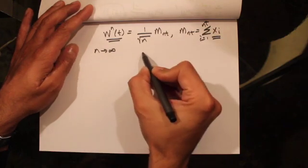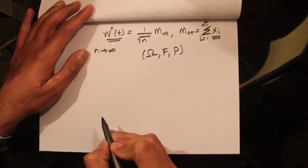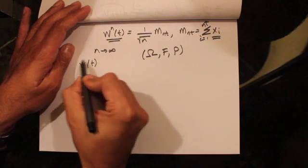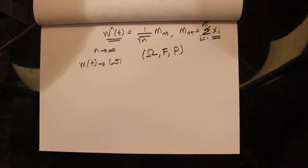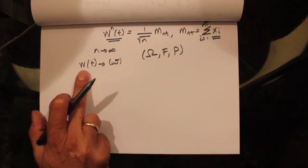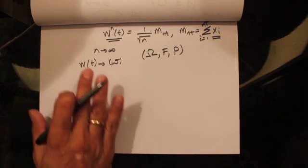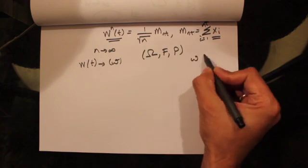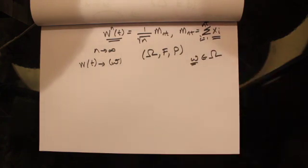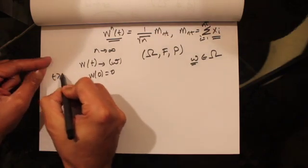Now for the formal definition of Brownian motion: let's consider a probability space given by a sample space, a sigma-algebra, and a probability measure. Consider a continuous function W(t) which depends on omega. You can think of it as tossing a series of coins and, depending on the outcome of those coin tosses, we get some sample path W(t). If we toss another series of coins we will get a different path. W(t) is the continuous function depending on the outcome of a random experiment, and omega belongs to our sample space.